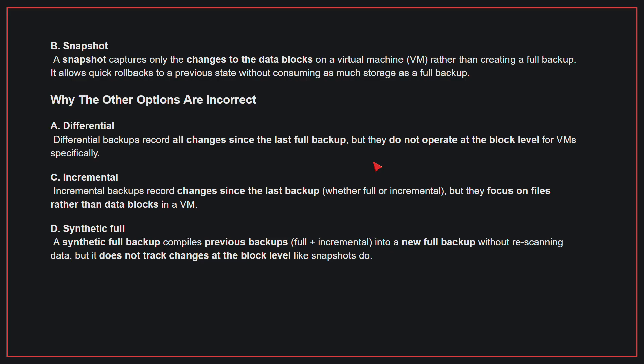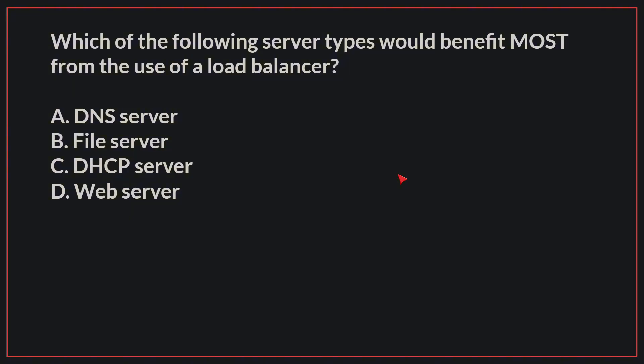Why the other options are incorrect? A. Differential — differential backups record all changes since the last full backup, but they do not operate at the block level for VMs specifically. C. Incremental — incremental backups record changes since the last backup, but they focus on files rather than data blocks in a VM. D. Synthetic full — a synthetic full backup compiles previous backups into a new full backup without rescanning data, but it does not track changes at the block level like snapshots do. Therefore, the correct answer is B, snapshot.